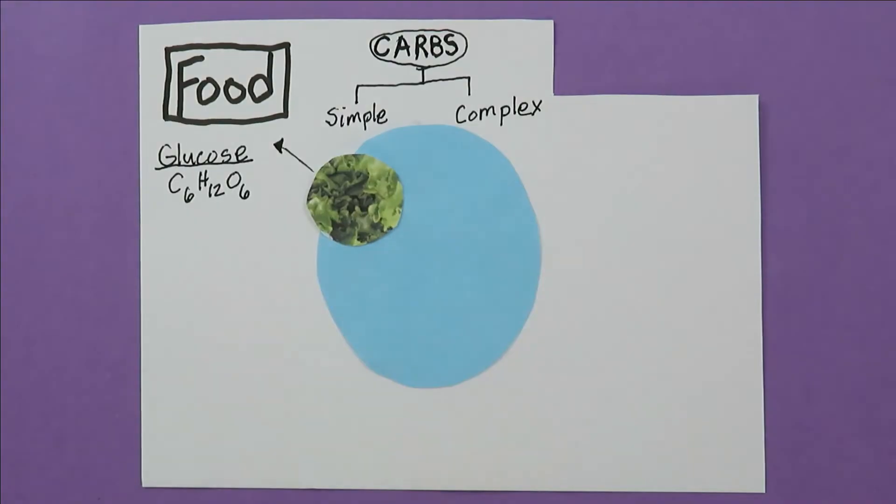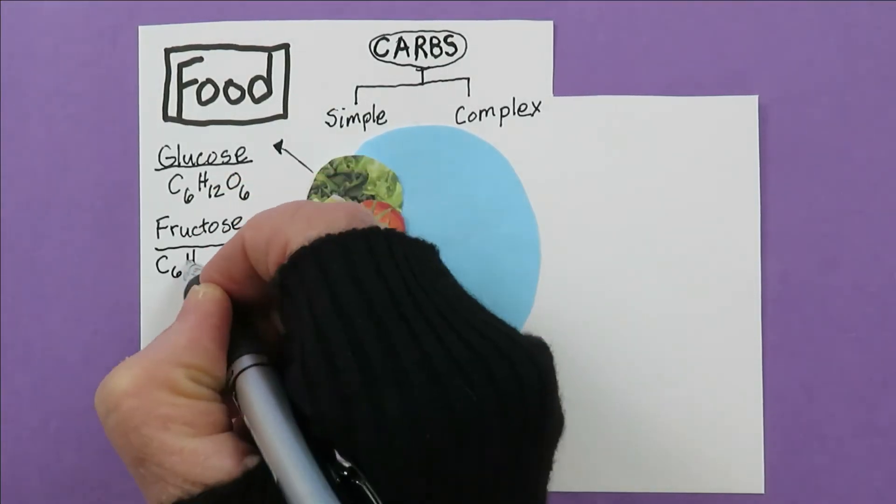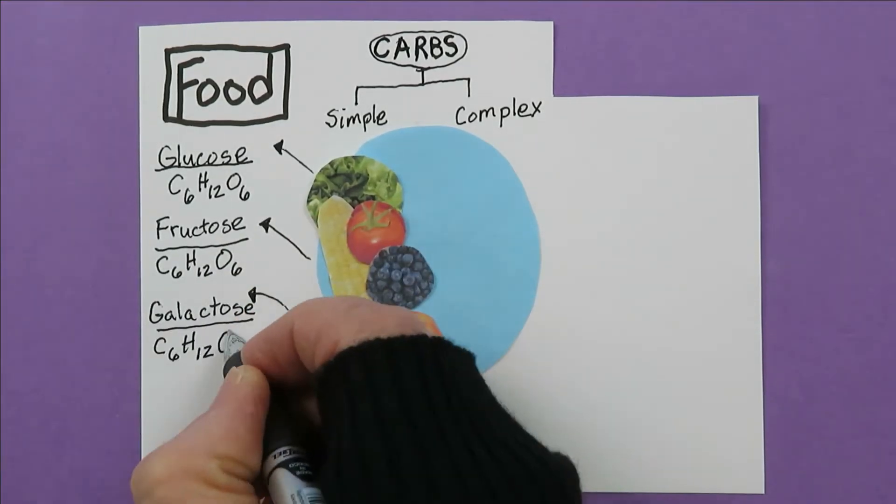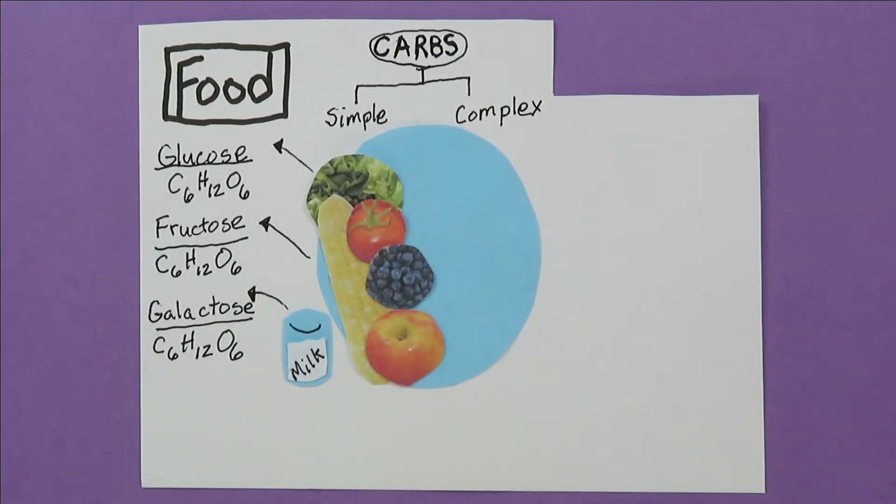Glucose is in veggies. Fructose is in fruit. Galactose is in milk. Look, they all have six carbons, 12 hydrogens, and six oxygens. But their structures aren't identical.